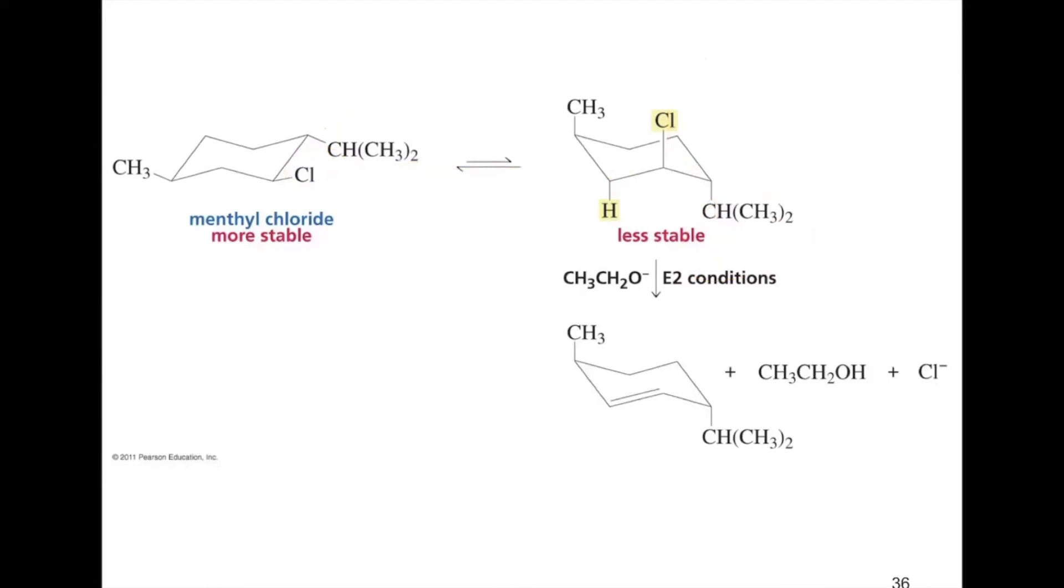With this chair, the isopropyl and chlorine are both equatorial. We need a ring flip to get chlorine into the axial position for elimination. Once we do that, this chlorine and hydrogen are anti-periplanar, so we can form a double bond here. However, the isopropyl group blocks this other position, so we cannot form a double bond there.